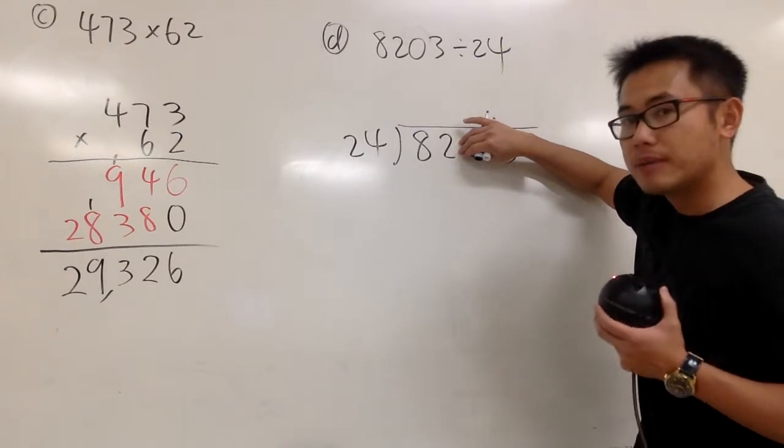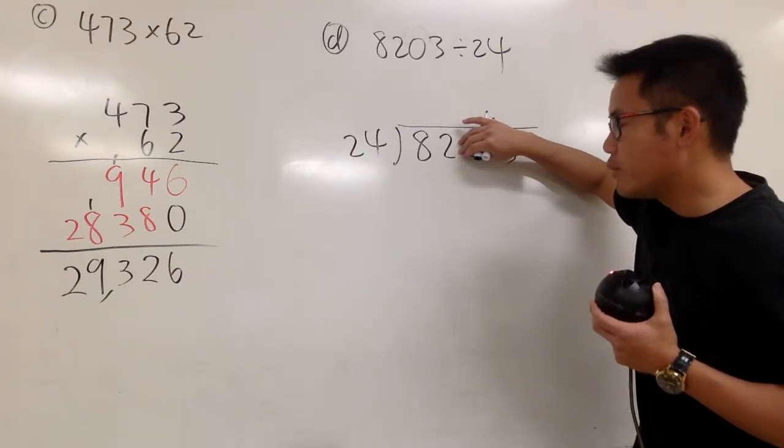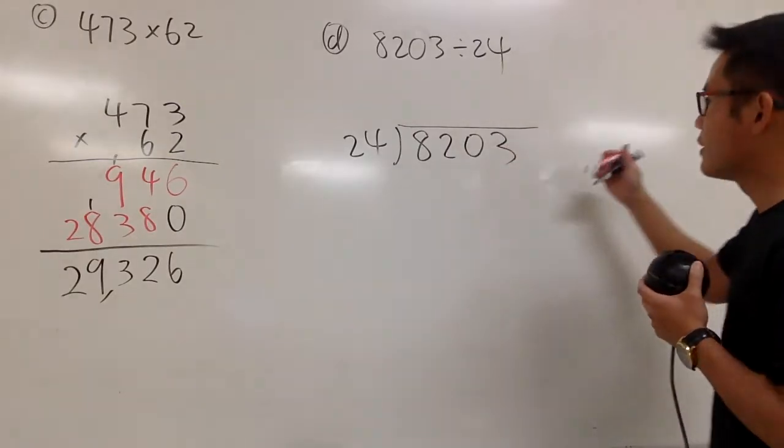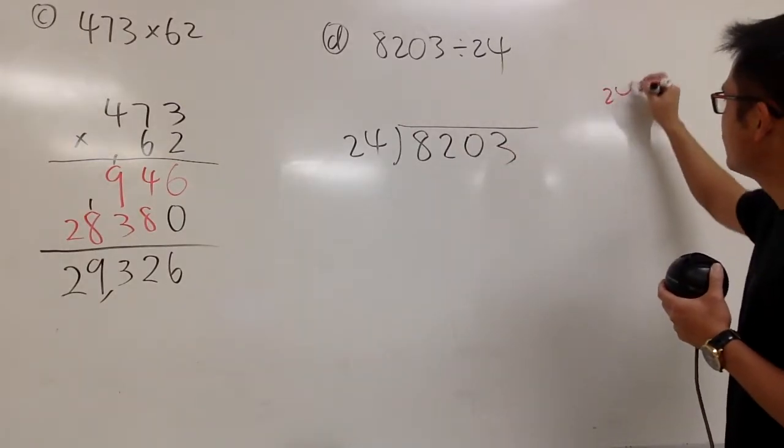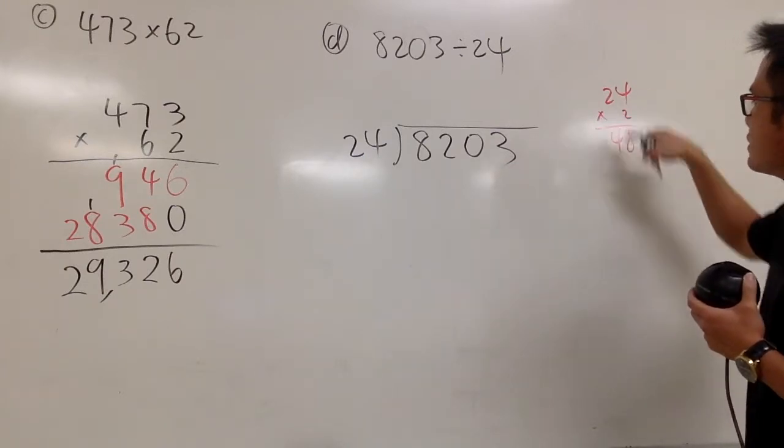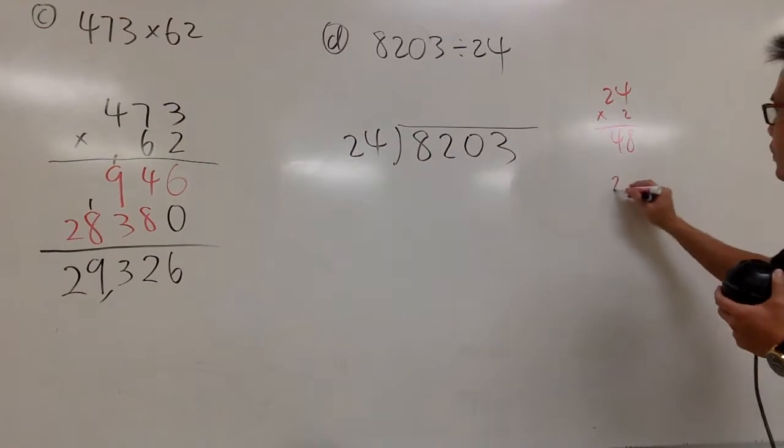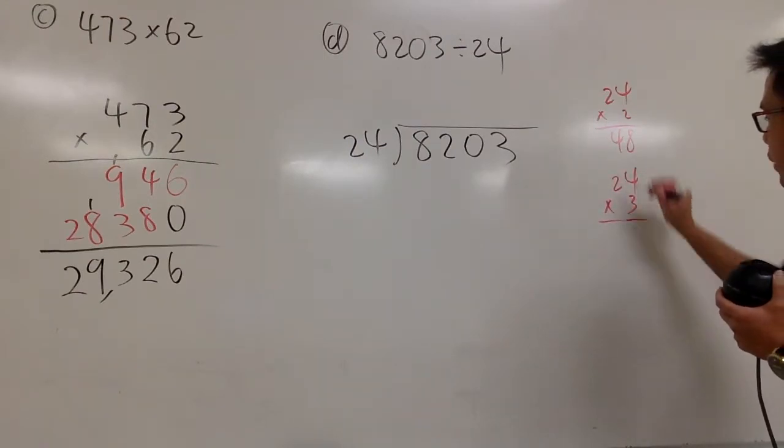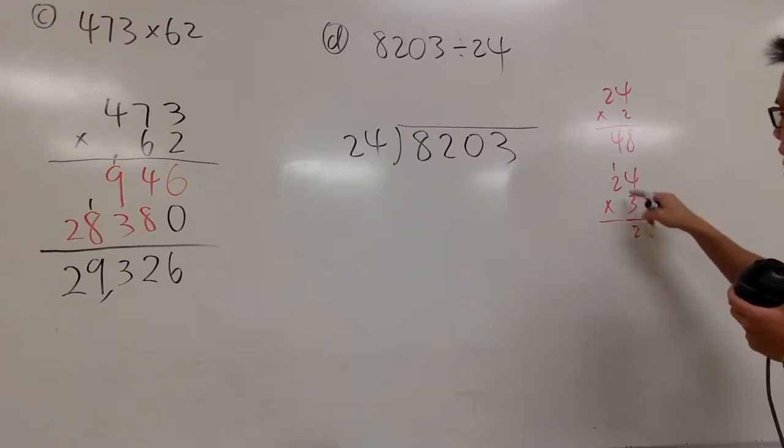Well, we know 24 times 2 is 48. 24 times 3 is 72. So let me write it down for you guys. Let's put down 24 times 2. We know this is 8, this is 4. So 48. And then, if we do 24 times 3, 3 times 4 is 12, like this. And then, 3 times 2 is 6, plus 1 is 72.